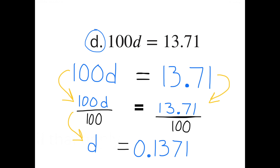D: 100d equals 13 and 71 hundredths. Since d is multiplied by 100, we divide both sides by 100. 100d divided by 100 equals d. On the other side, 13 and 71 hundredths divided by 100 equals 1371 ten-thousandths. So d equals 1371 ten-thousandths, or 0.1371.